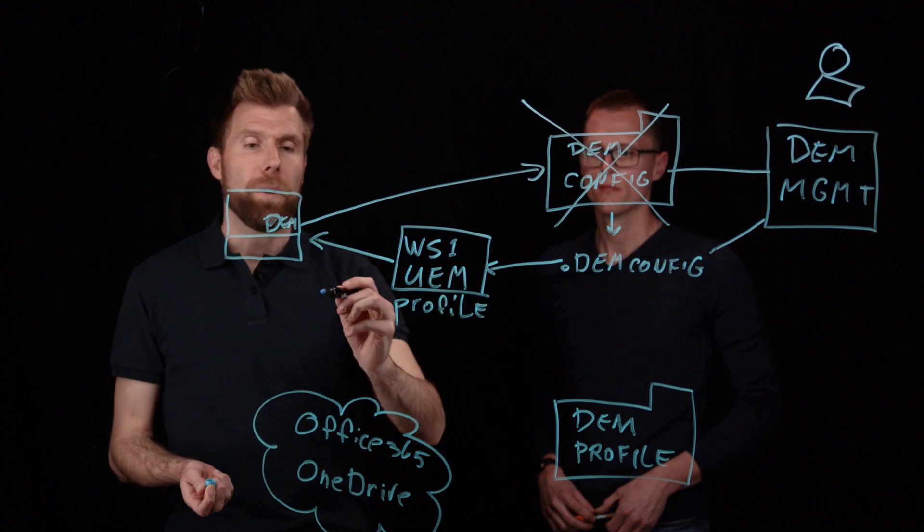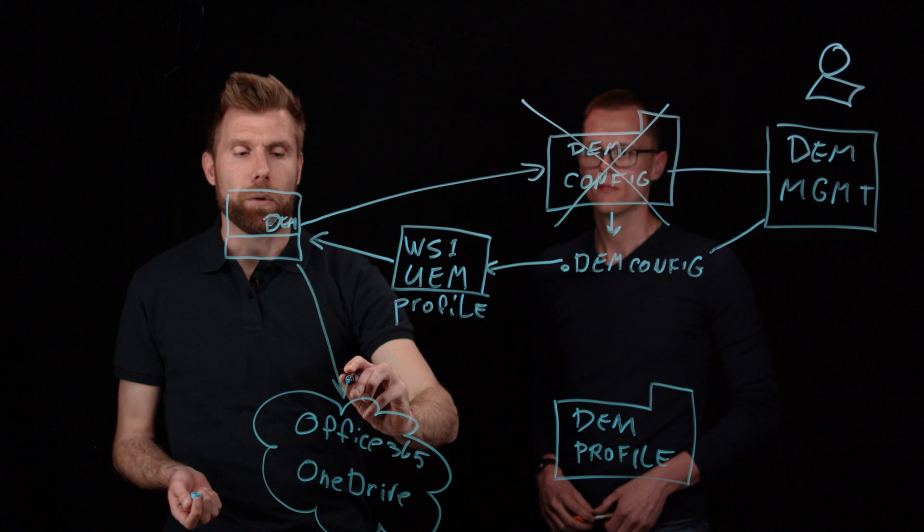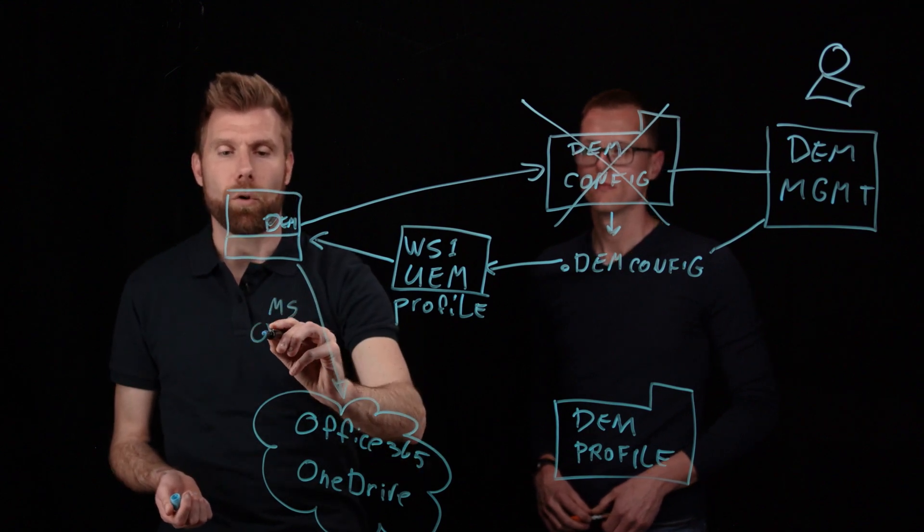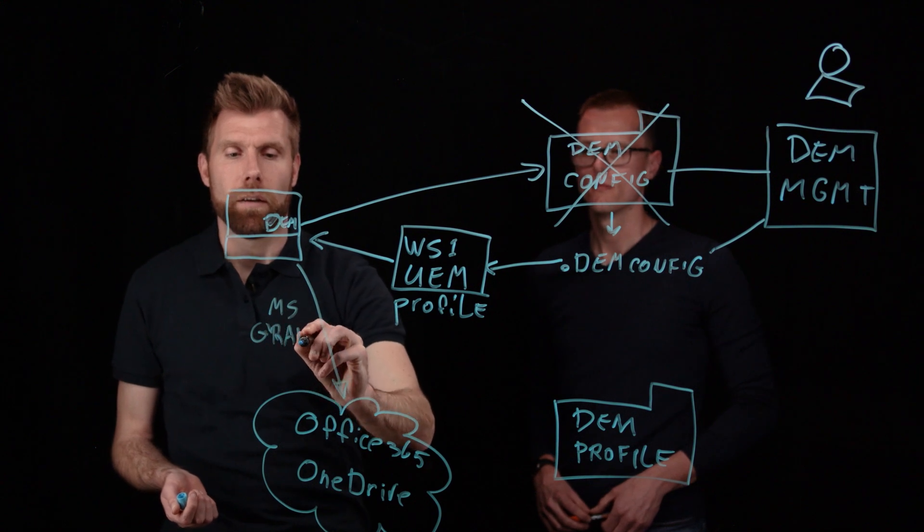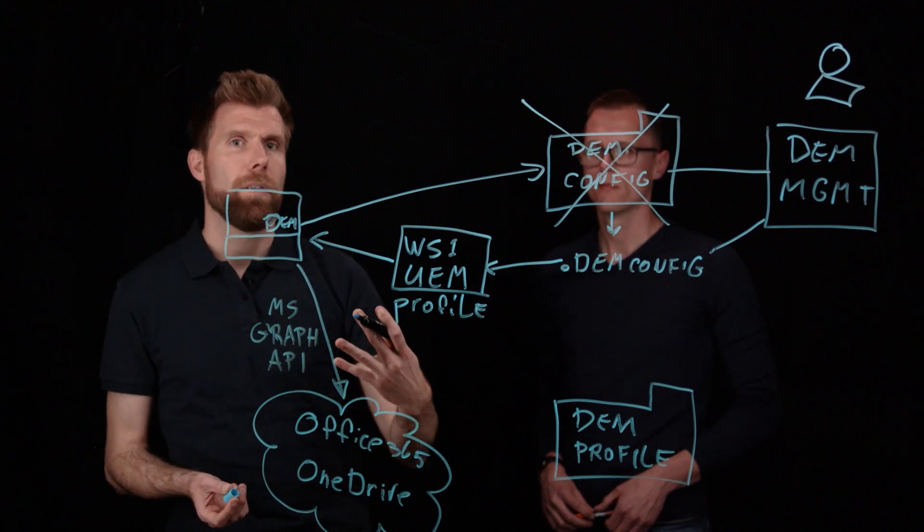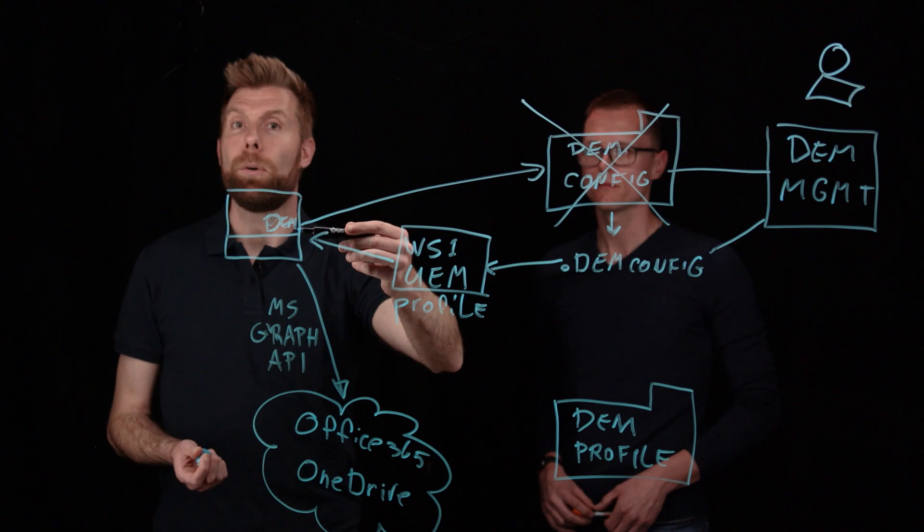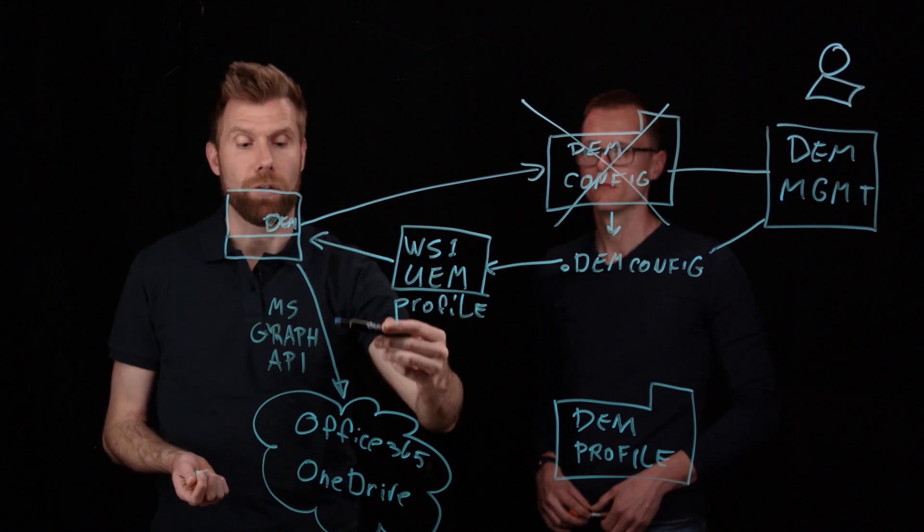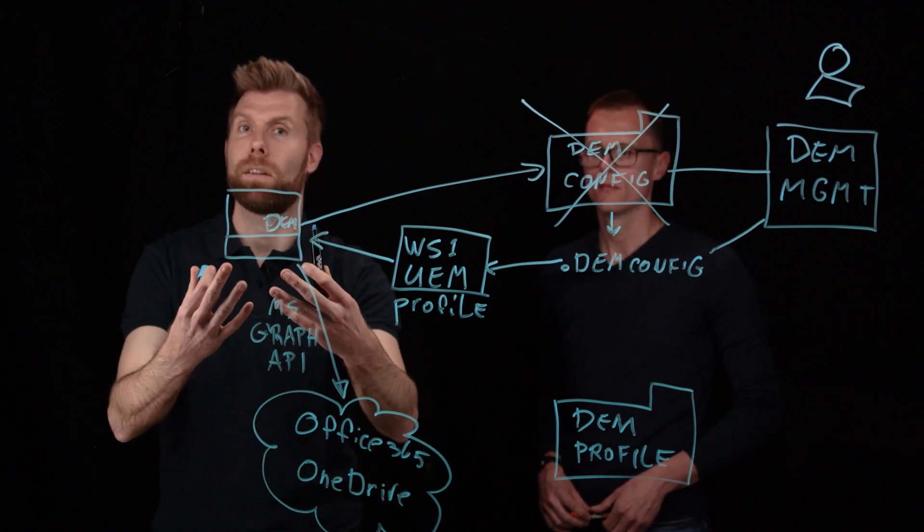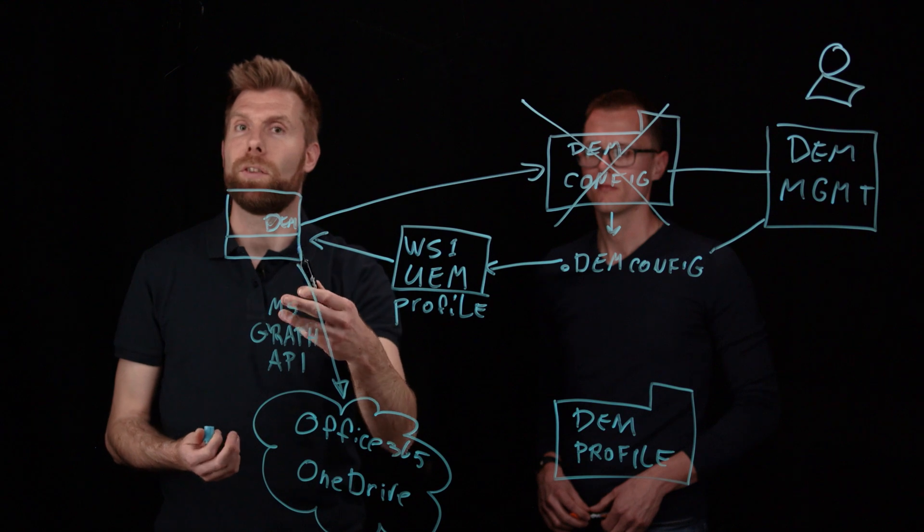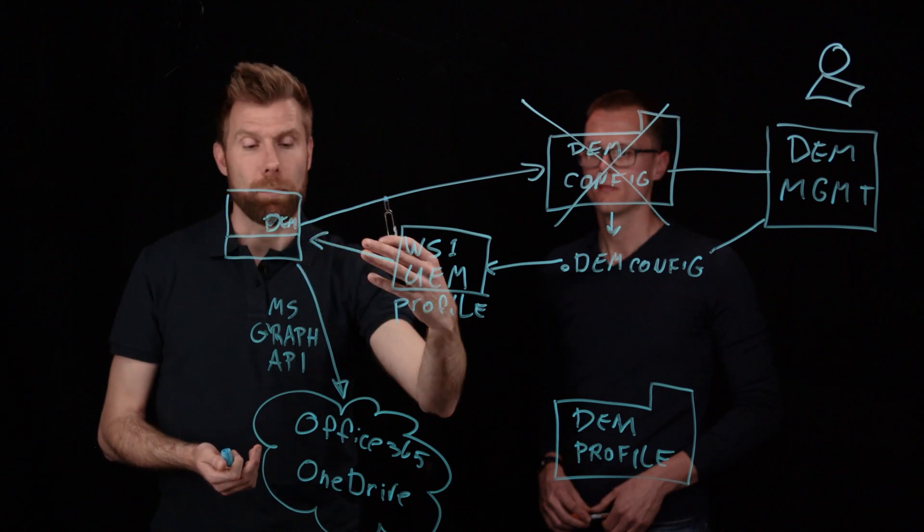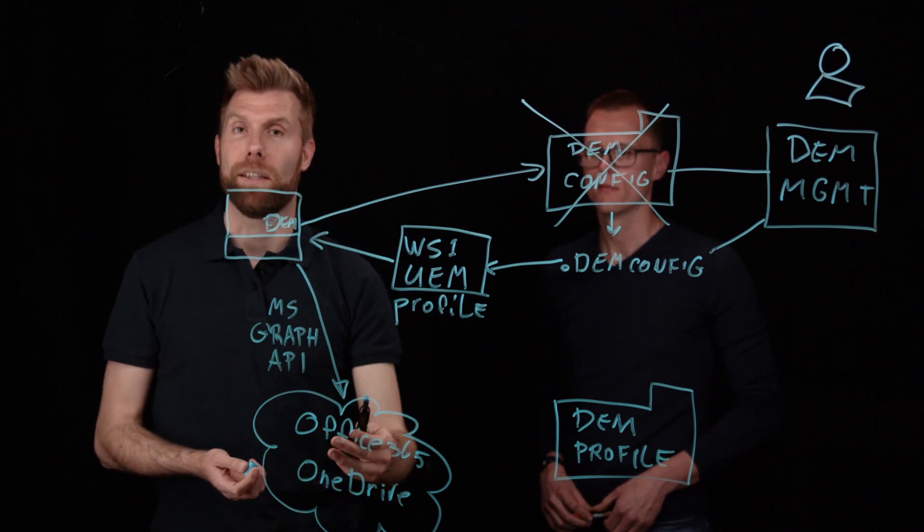Now what we've done is we've talked to Microsoft in order to make sure that we can support this. So we're going to use the MS Graph API to be able to do this. So at logon, very early, the DEM agent now has a component in it that can actually talk to OneDrive and can load the profile from OneDrive into the client, cache it locally. During the session, any changes in the profile will be stored in that local cache. And during log off, everything will be written back to the OneDrive cloud folder on the internet.